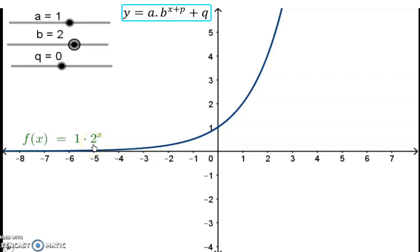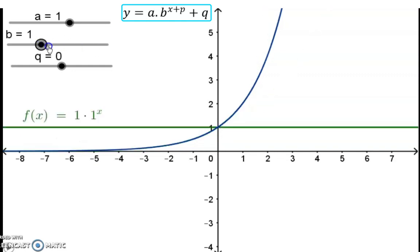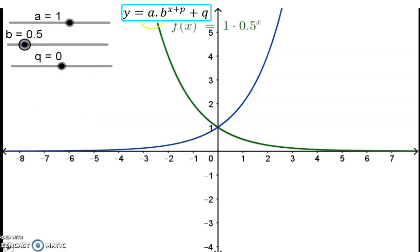The b value of 2 forms an increasing graph. As this b value increases, the graph bends more and becomes steeper. When the b value is equal to 1, the graph forms a straight line, so b can never be equal to 1. When the b value is smaller than 1, the graph will be decreasing.